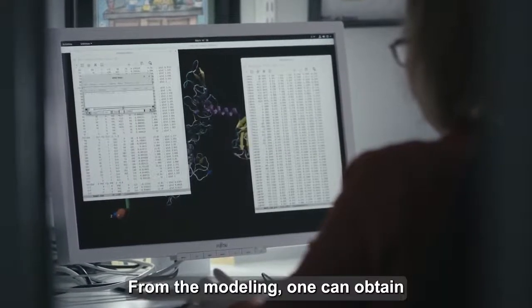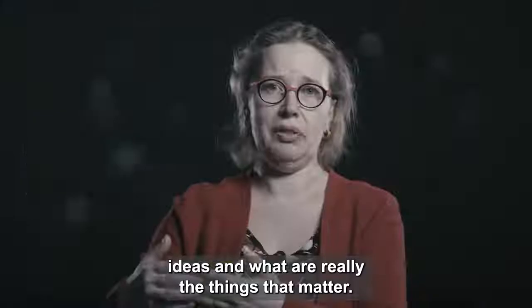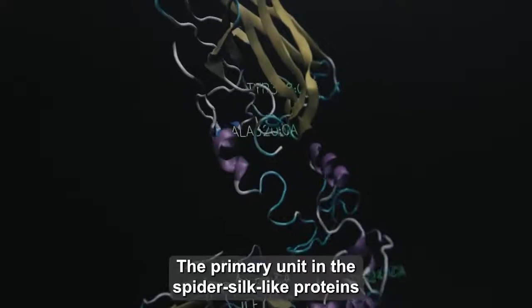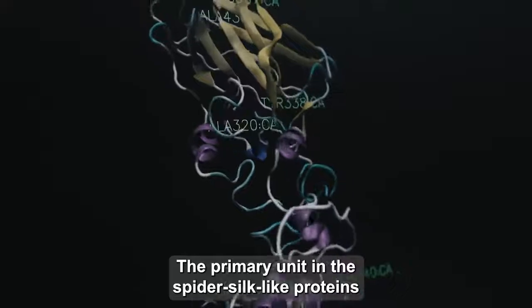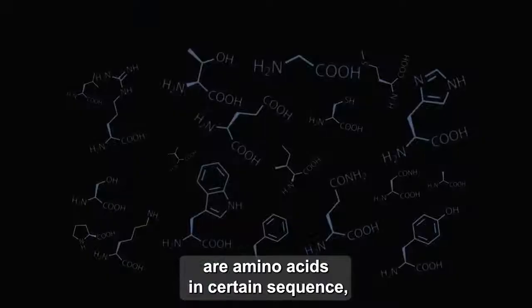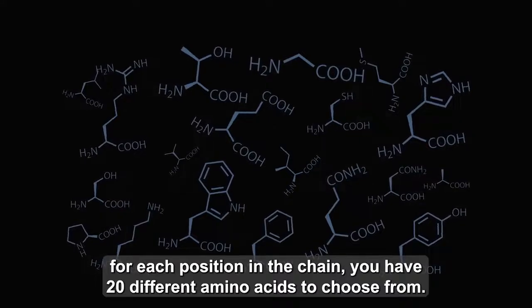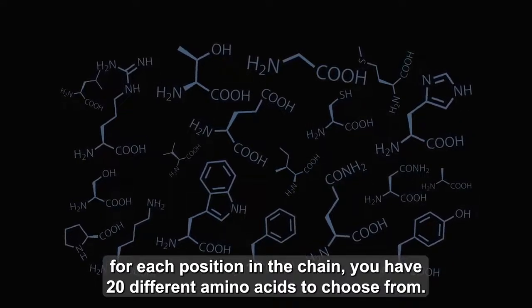From the modeling, one can obtain ideas and what are really the things that matter. The primary unit in the spider silk-like proteins are amino acids in a certain sequence. For each position in the chain, you have 20 different amino acids to choose from.